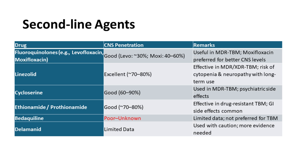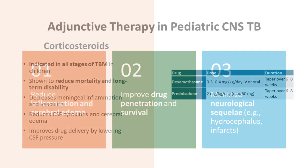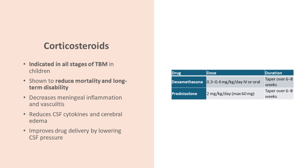Starting anti-TB treatment is not the end of the story — adjuvant therapy is essential in CNS TB. You may need drugs that decrease inflammation and cerebral edema, drugs that improve CNS drug penetration and survival, and drugs to prevent neurological sequelae such as hydrocephalus and infarcts. Corticosteroids are used to decrease inflammation. Cochrane analysis confirms corticosteroids should be used in pericardial effusion, miliary TB, and CNS TB across all stages of TBM to reduce vasculitis and meningeal inflammation.